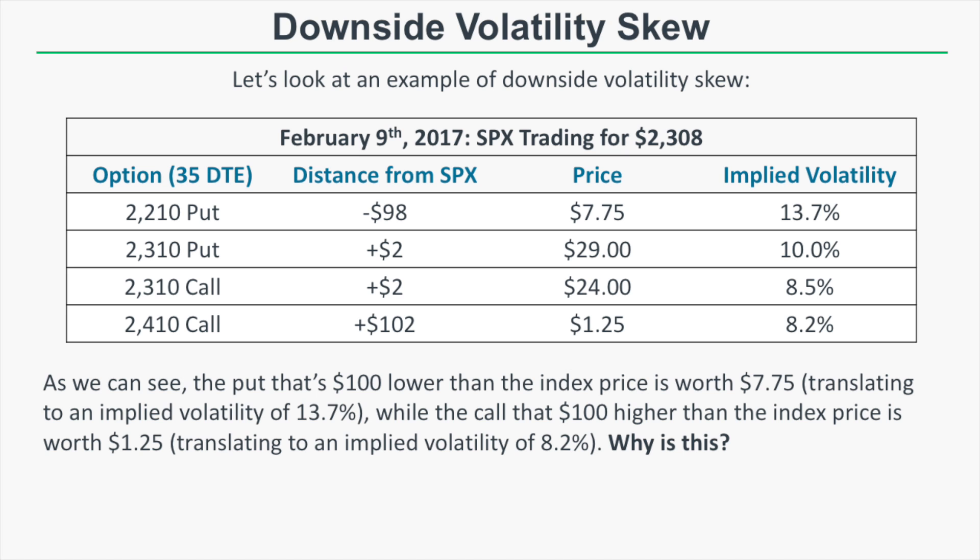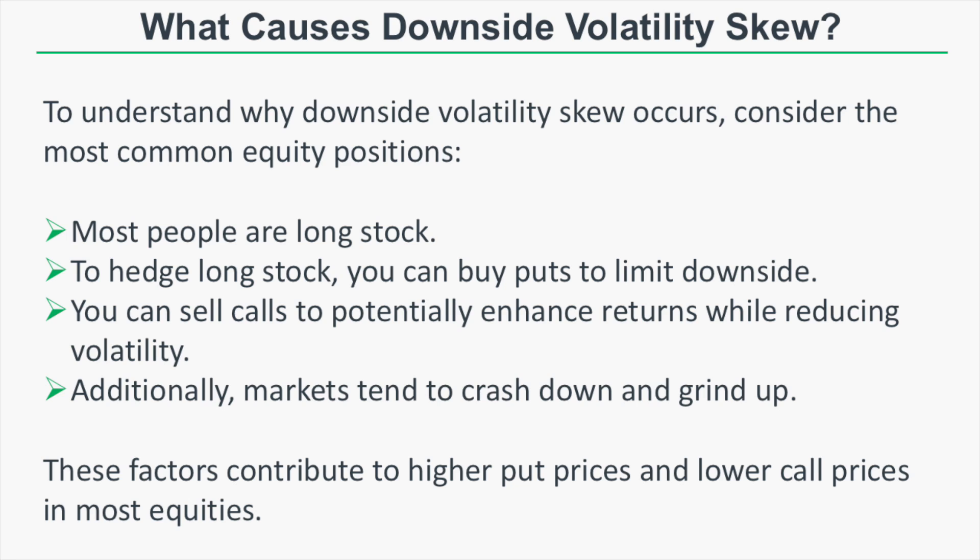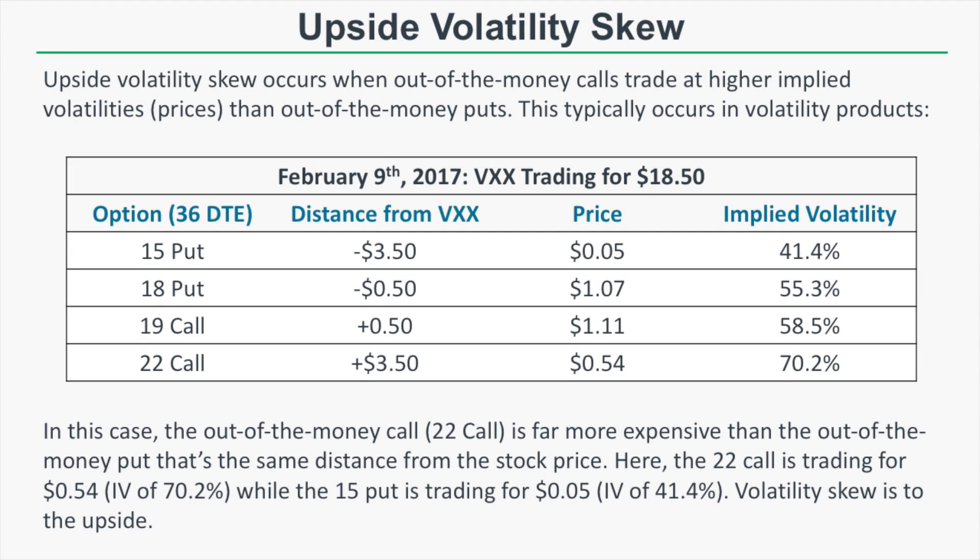Why is volatility skewed to the downside in SPX? First, most people own stocks and can buy downside puts to limit loss potential on a long stock position. They can also sell calls against long stock to enhance returns while reducing volatility. Lastly, markets tend to crash downwards and grind upwards — when markets fall they do so with velocity, and when they rise they do so gradually. All of these factors create more demand for downside puts and less demand for upside calls, leading to downside volatility skew.